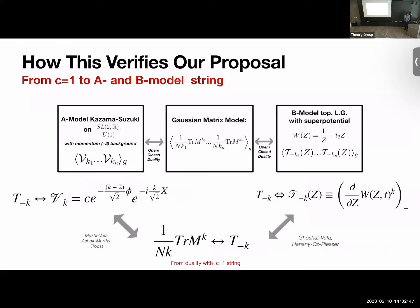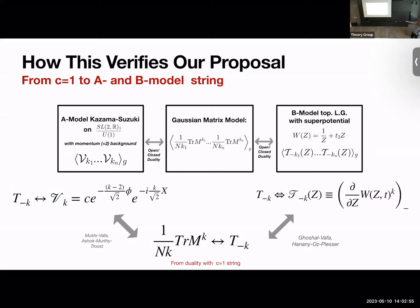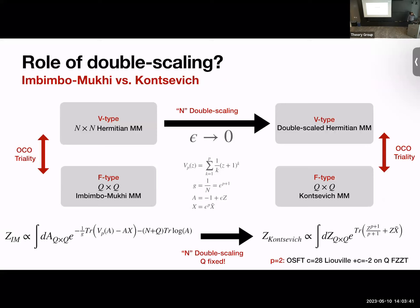To recap the big picture: we started from the Gaussian matrix model, extracted via the matrix equality this operator dictionary between trace M to the k and tachyons, and then piggybacked off work by various groups who understood how to rewrite the operators in this c=1 string on the B-model side and A-model side. Once you have that, you have the map between trace M to the k and the V's and curly T's. Because everything was exact in 1/N, this is true to all genus.